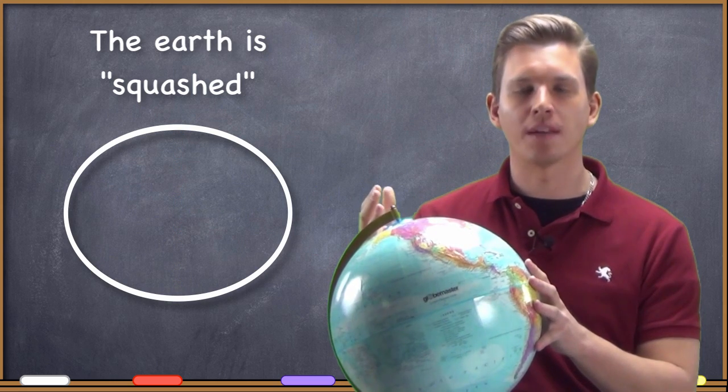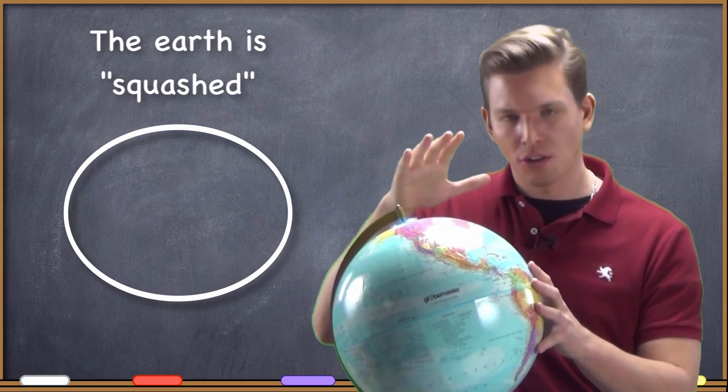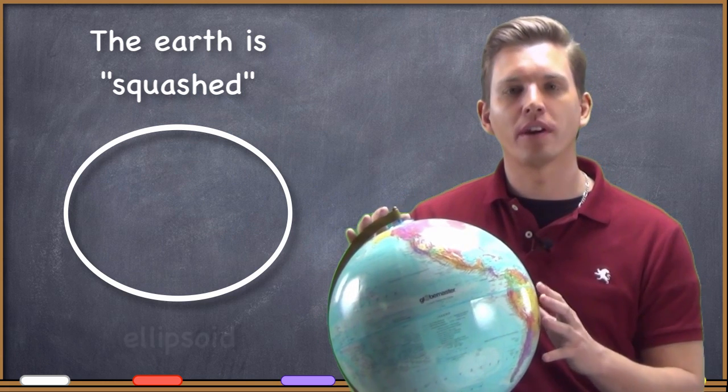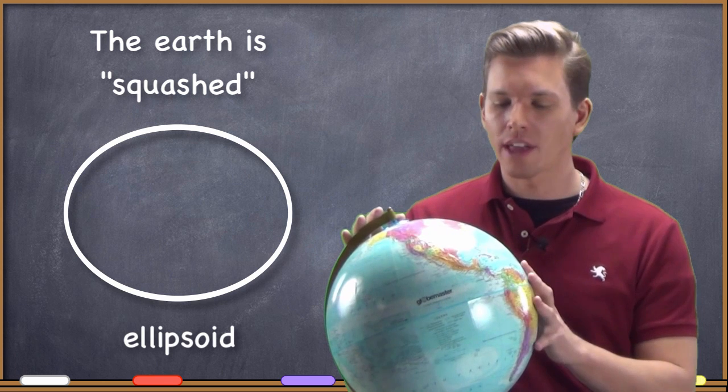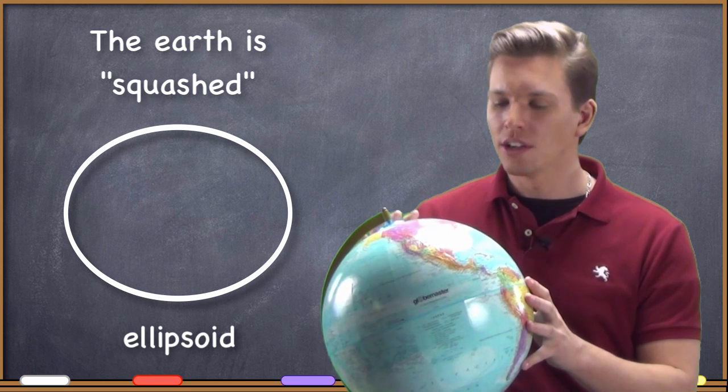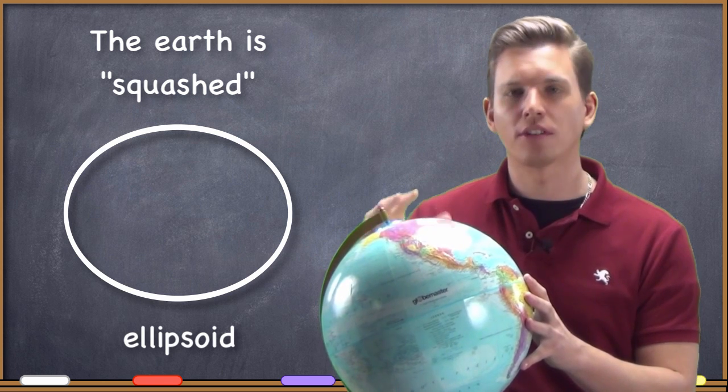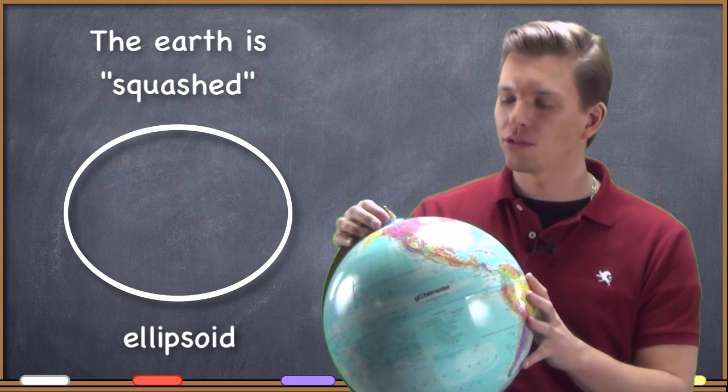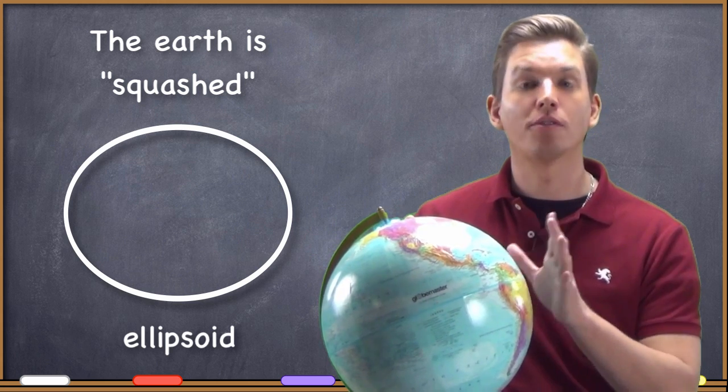So what do you call a shape that is a sphere that you squashed a little bit? Well, if you take a sphere and you squash it, you end up with an ellipsoid. So that's the terminology that we use. If we're trying to construct a model of the Earth, many times when you're talking about very precise measurements, you're not going to base it off of a sphere.